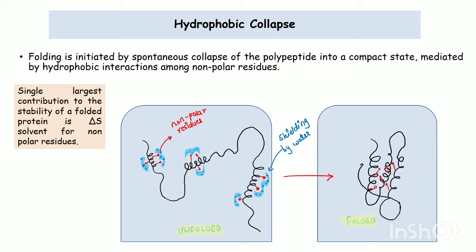I am classifying these amino acids because we are going to study hydrophobic collapse, which is simply concerned with the hydrophobic amino acids that are part of the polypeptide chain. The folding is initiated by the spontaneous collapse of the polypeptide into a compact state, mediated by hydrophobic interactions among non-polar residues. For example, in this picture the polypeptide is in its linear form with random coiling, and the surrounding environment is also a major contributing factor. Here water molecules are present in the surroundings.